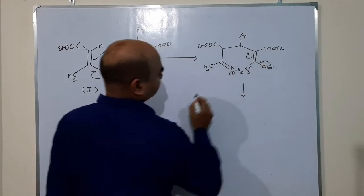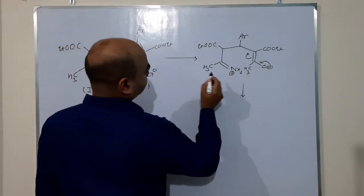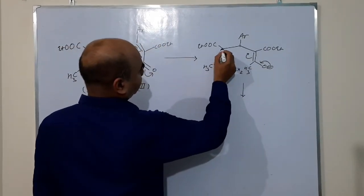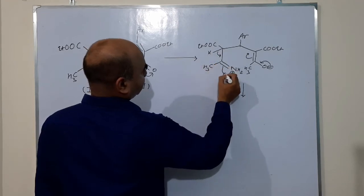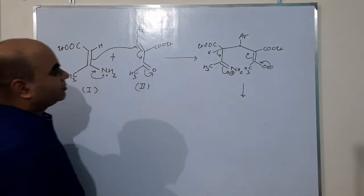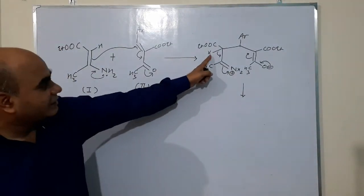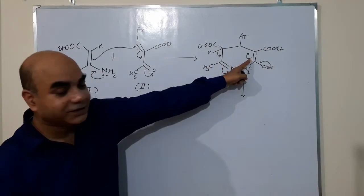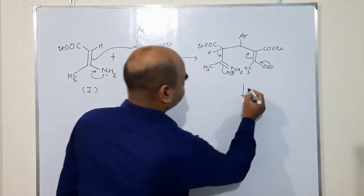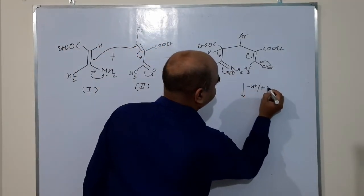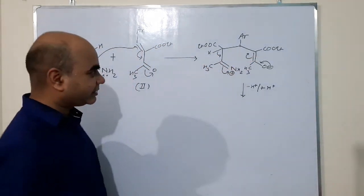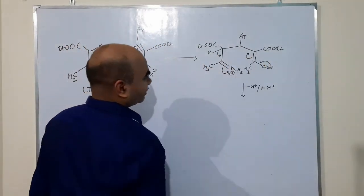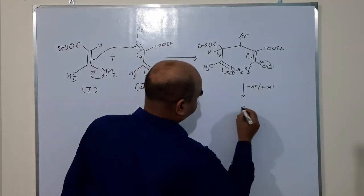And there is a proton, and this pi bond will go back to nitrogen, and this proton will be taken up by this double bond. Remember: minus H+ and plus H+. The proton eliminating from here will be taken up by this carbon, and we will have an ester here, ester here, this aromatic ring here. Now the reaction is simple: you see, this is a primary amine, and this will react with this carbonyl.